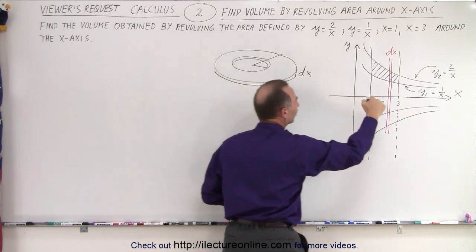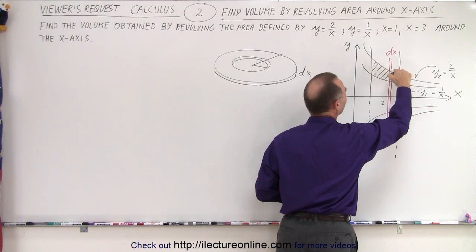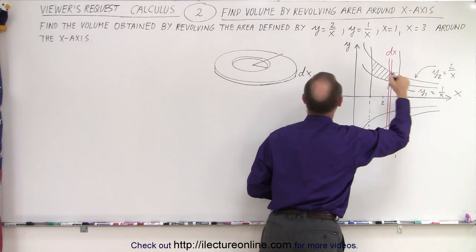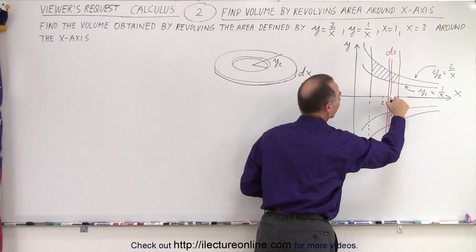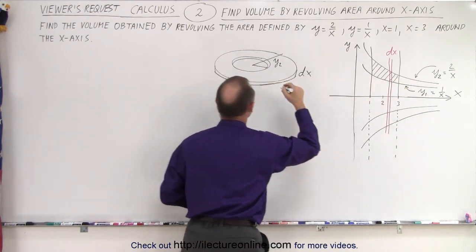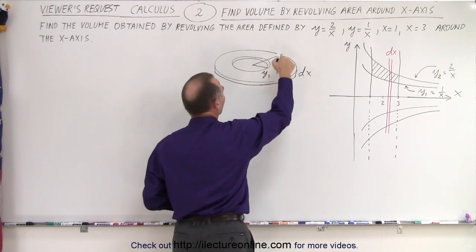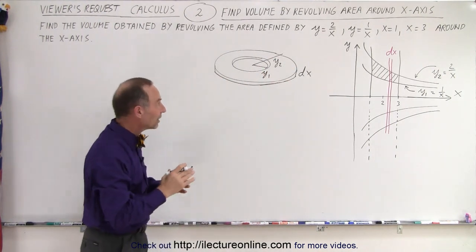The outer radius is defined by the distance from the center all the way to the very top function, which is y2. And the inner radius would be from the x-axis to the lower function, which is y1. So we have y2 and y1 as the outer and inner radius.